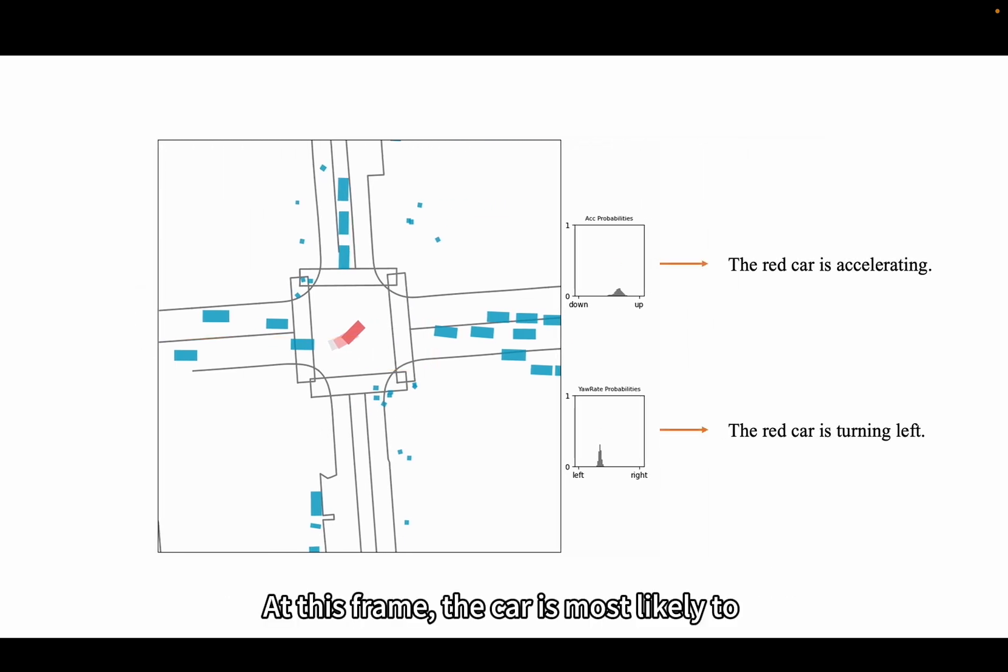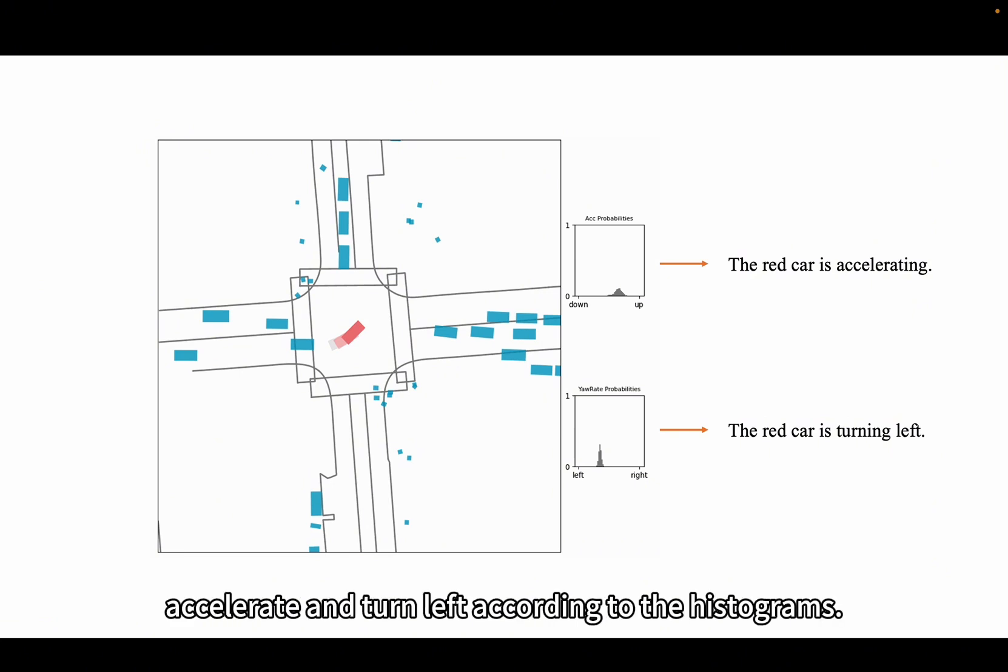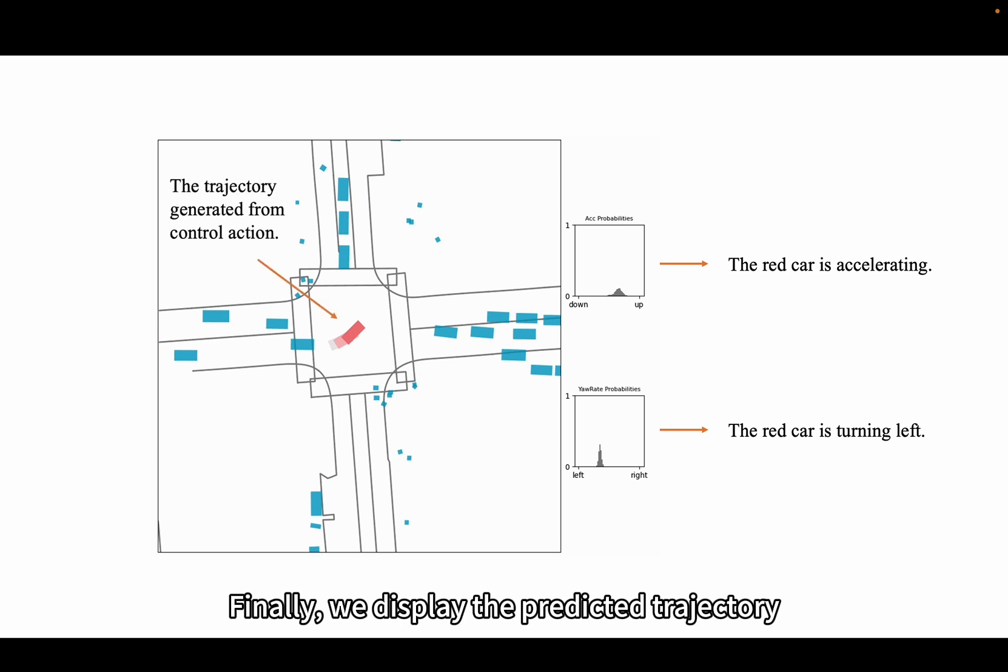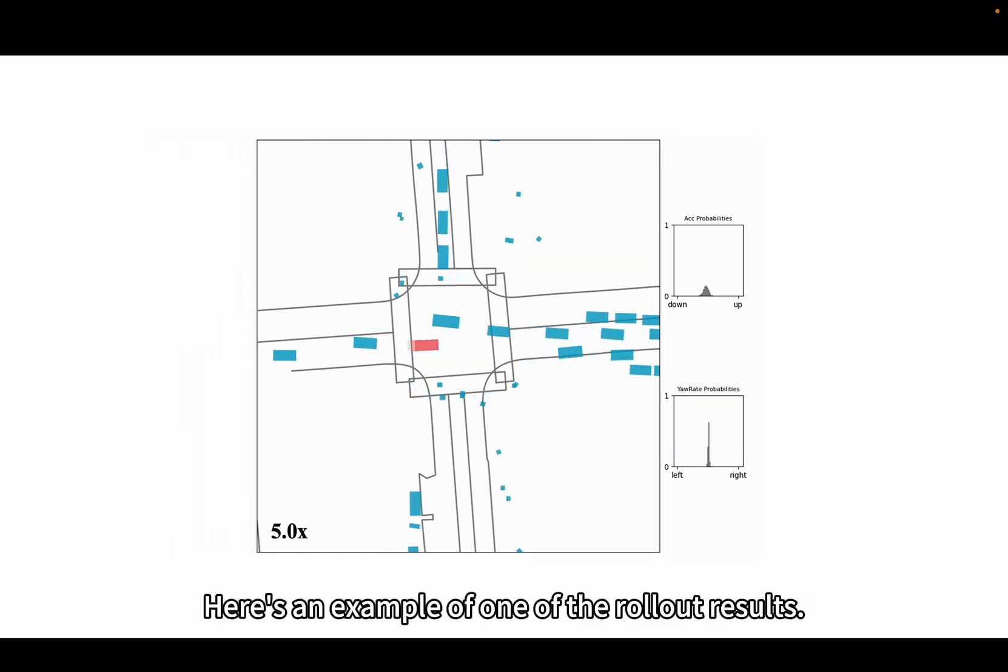At this frame, the car is most likely to accelerate and turn left according to the histograms. Finally, we display the predicted trajectory generated from the sampled control actions. For clarity and to show speed variation, a one-second trajectory is shown. Here's an example of one of the rollout results.